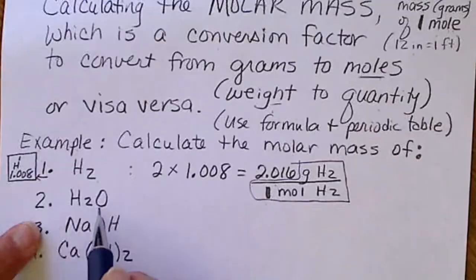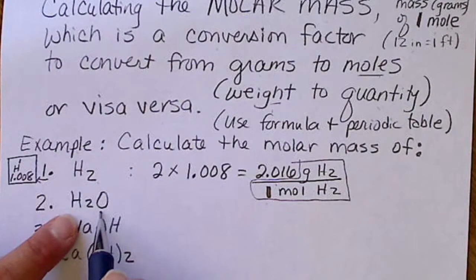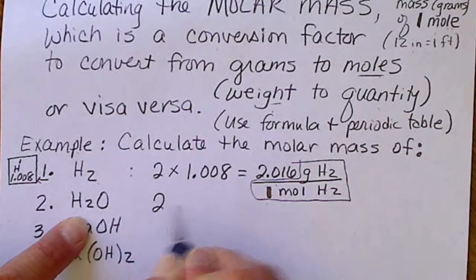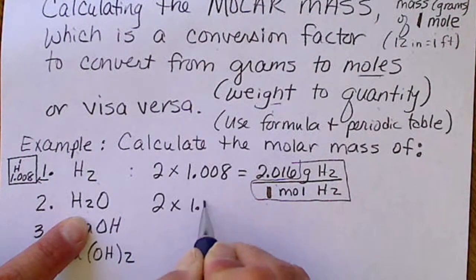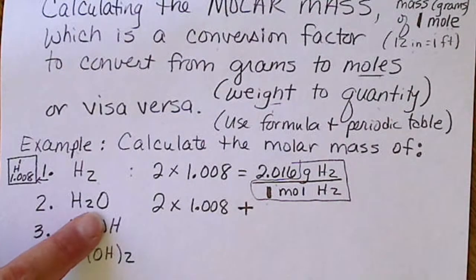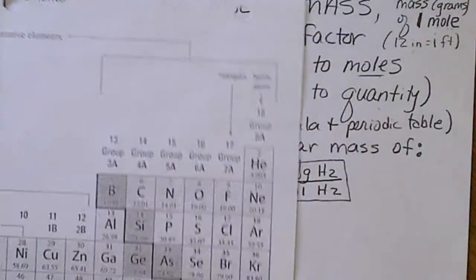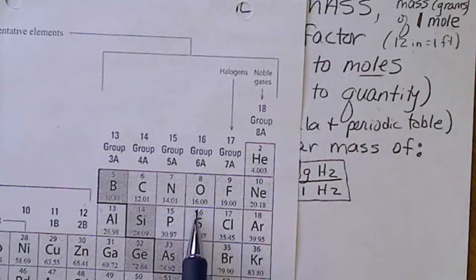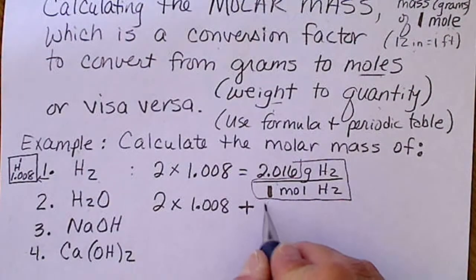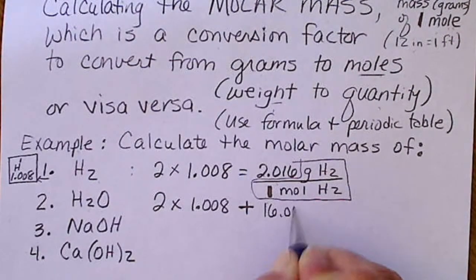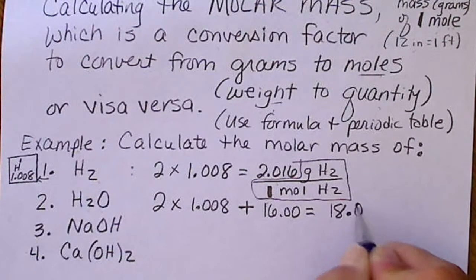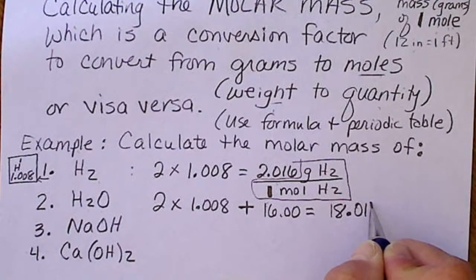For example, looking at the molar mass of H2O, we have two H's. This is 2 times 1.008 plus the mass of oxygen. If we look on the periodic table, oxygen weighs 16. We add that to 16 and we get 18.016.